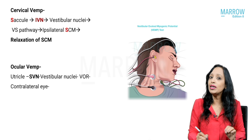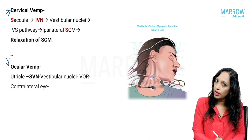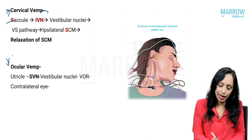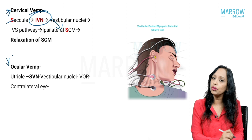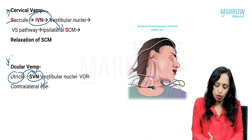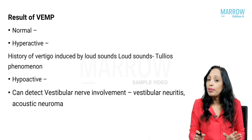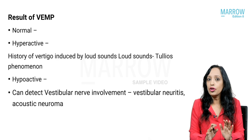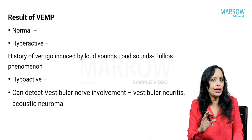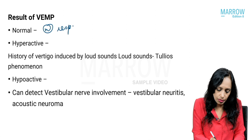In patients with Tullio's phenomenon, we will do the VEMP test — both cervical VEMP and ocular VEMP. An important exam question: cervical VEMP is mediated by which nerve? It goes from the saccule through the inferior vestibular nerve to the ipsilateral sternocleidomastoid. Ocular VEMP goes from the utricle through the superior vestibular nerve to the contralateral eye. In normal people, when you give a loud sound there will be a normal startling response — a normal curve within the expected range.